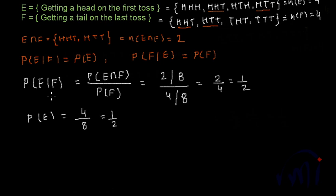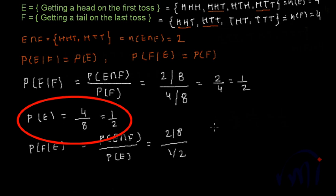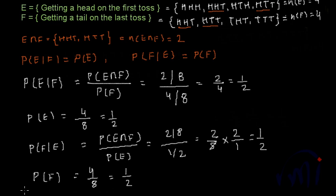Event E is actually independent of event F. Now we check whether event F is independent of event E. P(F|E) = P(E∩F) ÷ P(E) = (2/8) ÷ (1/2) = (2/8) × (2/1) = 1/2. Similarly, P(F) = 4/8 = 1/2. So event F is also independent of event E, and we can say that events E and F are independent events.